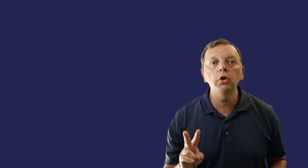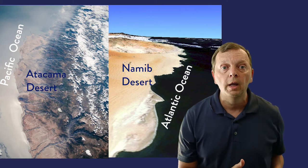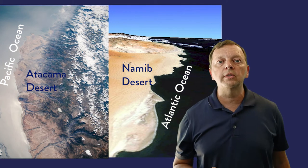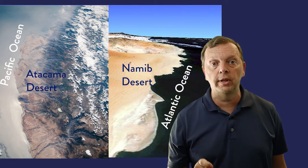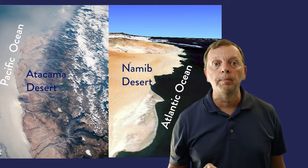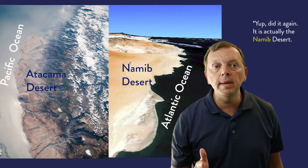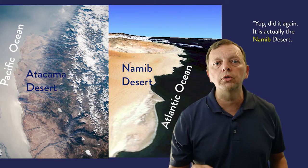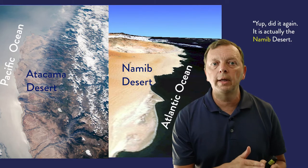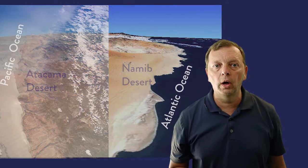To further illustrate the effects of ocean currents, two of the driest deserts in the world are actually on the coast of an ocean. On the west coast of South America we find the Atacama Desert, which is actually the driest desert in the world. And on the west coast of Africa we find the Namibian Desert. Both of these deserts owe their dryness to the cool water of the Atlantic and Pacific oceans on the west coast.